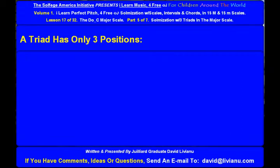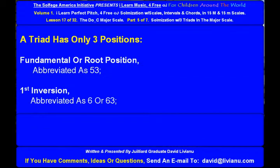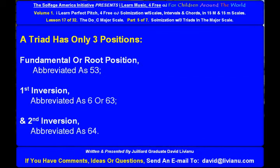A triad has only three positions: fundamental or root position, abbreviated as 5-3; first inversion, abbreviated as 6 or 6-3; and second inversion, abbreviated as 6-4.